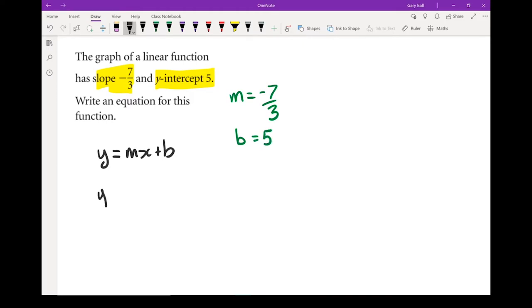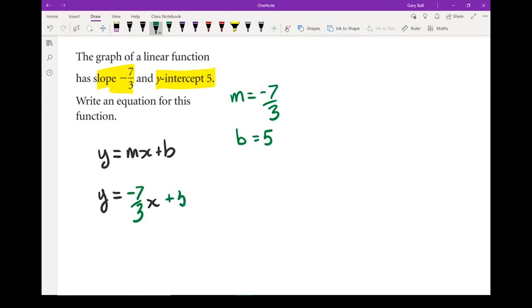Put that into the equation. Now remember, an equation of a linear function is always going to have an independent and dependent variable. So that x and y are going to stay the same. Instead of m, we're going to put in negative 7 thirds. That x is still there from the equation. We're going to put in a plus 5. There's my answer, in slope-intercept form.